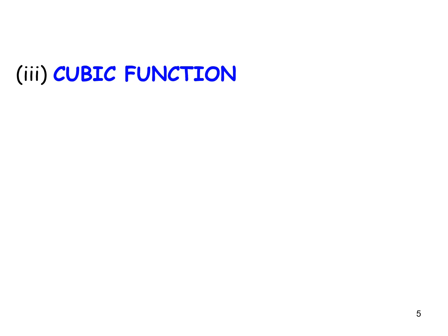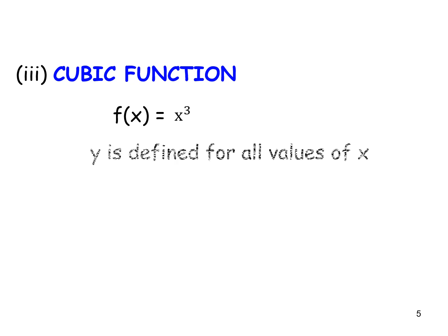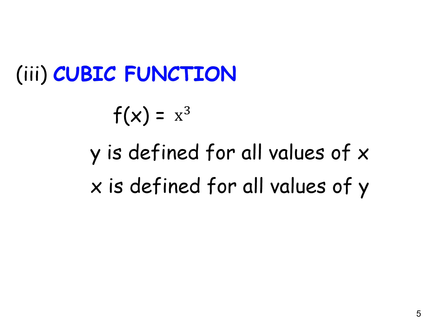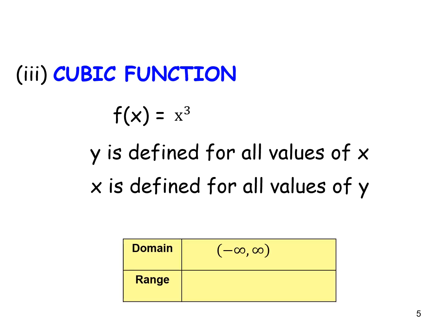For a cubic function f(x) = x³, y is defined for all values of x and x is defined for all values of y. So the domain is all real numbers and the range is also all real numbers, negative infinity to infinity.